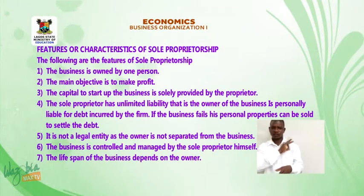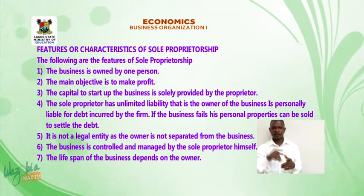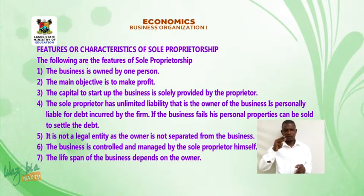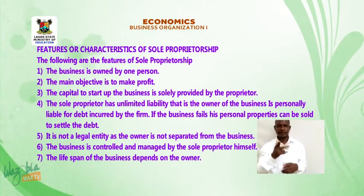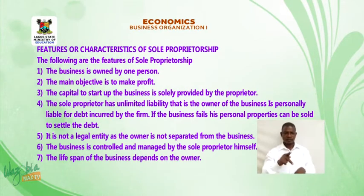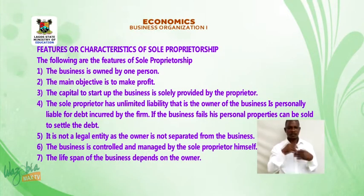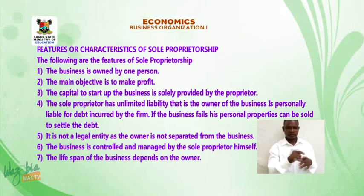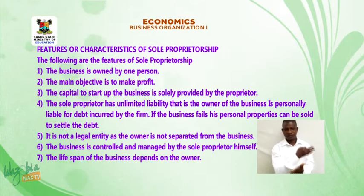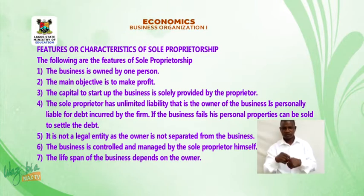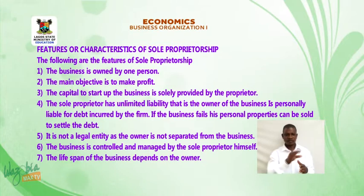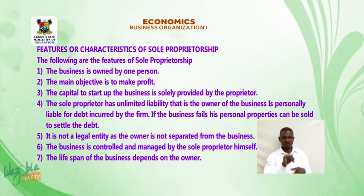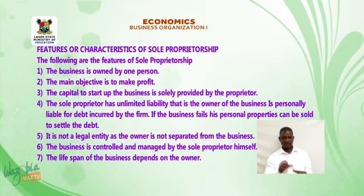Features or characteristics of sole proprietorship: 1. The business is owned by one person. 2. The main objective is to make profit. 3. The capital to start up the business is solely provided by the proprietor. 4. The sole proprietor has unlimited liability — the owner is personally liable for debt incurred by the firm, and personal properties can be sold to settle debt if the business fails. 5. It is not a legal entity, as the owner is not separated from the business. 6. The business is controlled and managed by the sole proprietor himself. 7. The lifespan of the business depends on the owner.